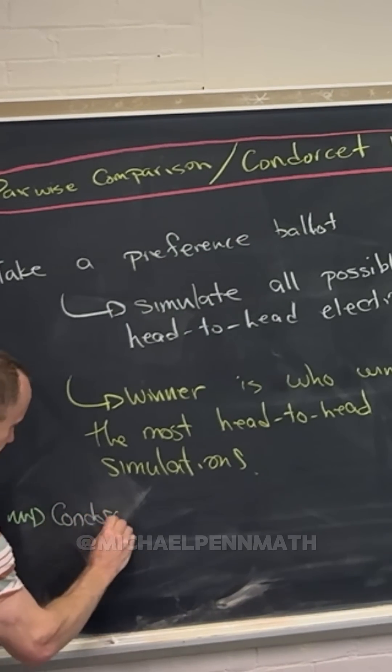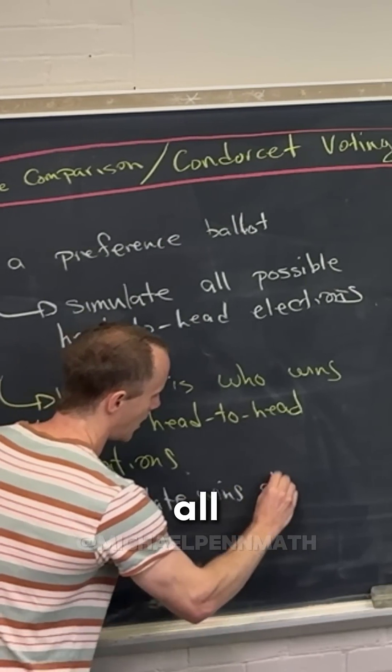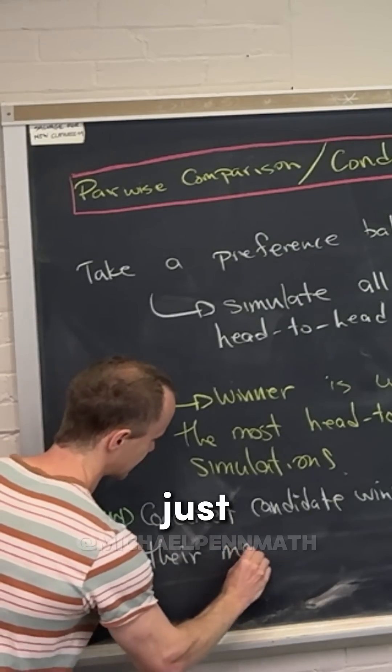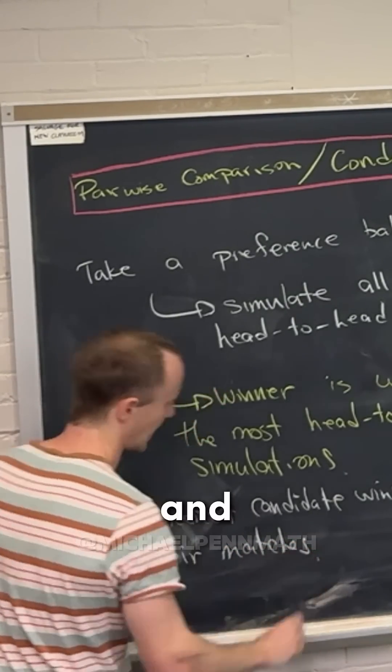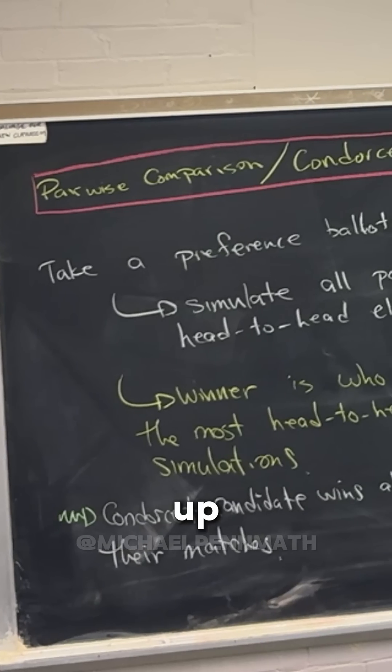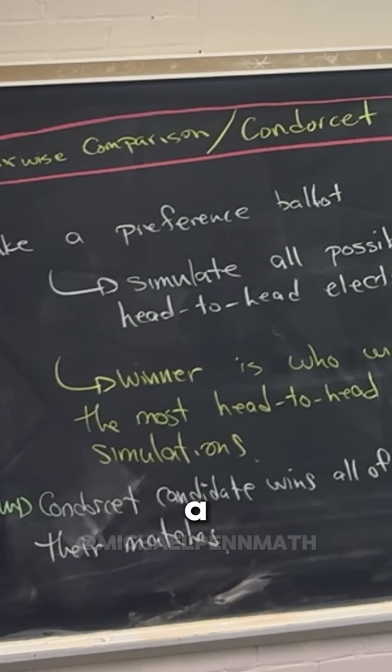The Condorcet candidate wins all of their matches. And I say all of their matches because they clearly can't win the ones that they're not in. When you come up with all of these head-to-head matches, they only include two people, so they're going to leave out a bunch of people.